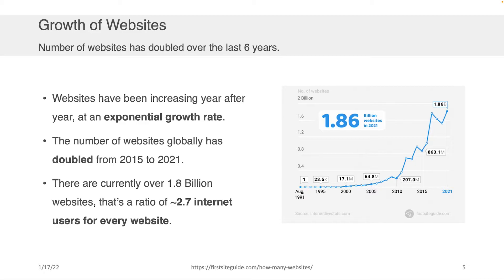There's roughly 2.7 Internet users for every one website that exists — one website, three distinct people on the planet Earth. Hopefully by the time we're done with this class, we're going to push that ratio a little further down because each of you are going to have websites, and we'll continue to chip away at that ratio until it gets closer to one.